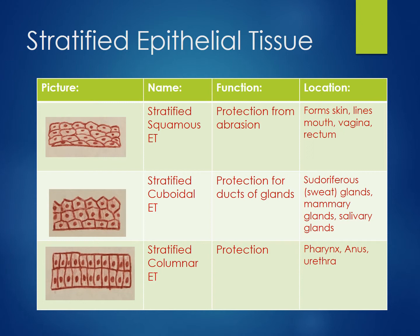Stratified epithelial tissue has numerous layers. Squamous, cuboidal, and columnar stratified epithelia have the same shapes as discussed with simple epithelia. In general, stratified epithelial tissue provides protection. When looking at stratified squamous specifically, it can be either keratinized or non-keratinized. Keratinization gives the tissue a tough, water-resistant outer layer, like we see in skin. Non-keratinized tissue lines moist surfaces that are subjected to abrasion.